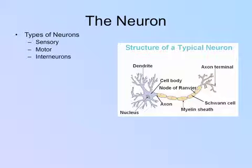A good analogy is a subway system: sensory neurons are the inbound trains, interneurons are the switchboard centers that move messages to different tracks, and motor neurons are the outbound trains. Sensory neurons bring the input, interneurons decide which motor neurons need that information, and motor neurons produce the output.